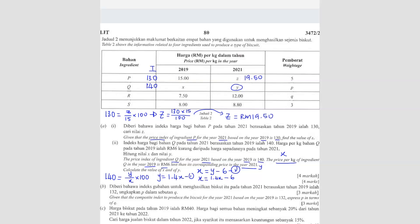Bringing 6 to the other side and the X across, I get 6 equals to 0.4X, so X equals to 6 over 0.4. The answer is RM15. So X equals 15, and if we know X is 15 we can find Y. Using back the first equation: Y equals to 1.4 times 15, the answer is RM21.